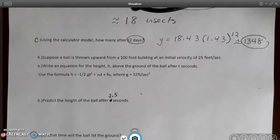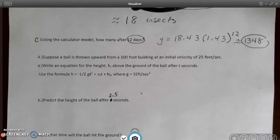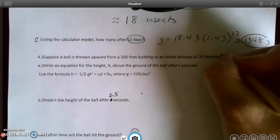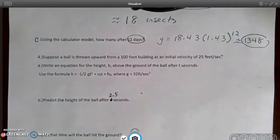It says, suppose a ball is thrown upward from a 100-foot building at an initial velocity of 25 feet per second. That should be per second squared. Write an equation for the height h above the ground of the ball after t seconds.